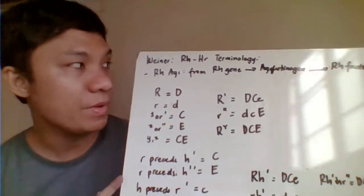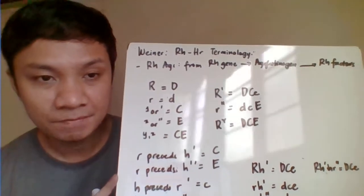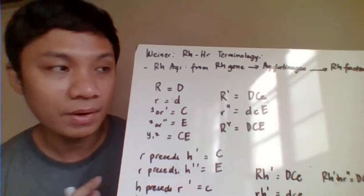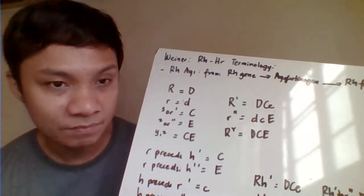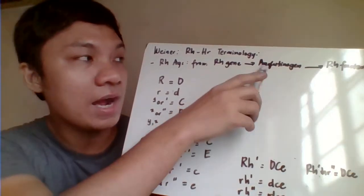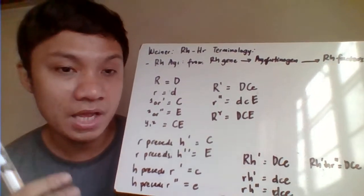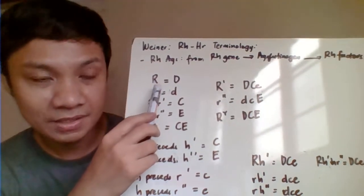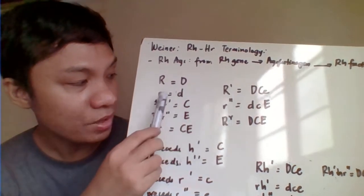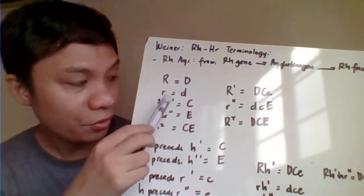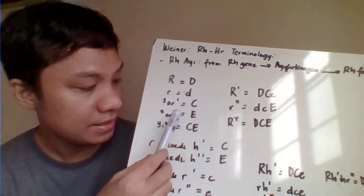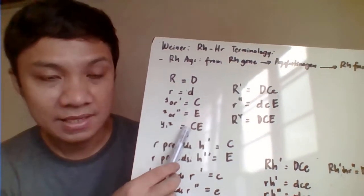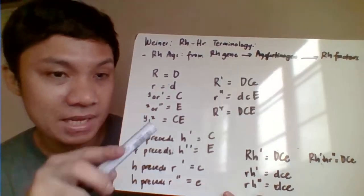Next is the Wiener or RHHR terminology. The Wiener nomenclature, like Fisher & Race, also has a genetic basis, stating that RH antigens are derived from one RH gene. That one RH gene gives rise to several agglutinogens, which eventually give rise to several RH factors. In Wiener's system: big R represents big D, small r represents small d. The number 1 or prime signifies capital C, number 2 or double prime signifies big E, and superscript Y and Z signify that both C and E are capital letters.